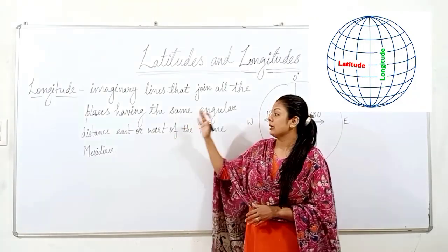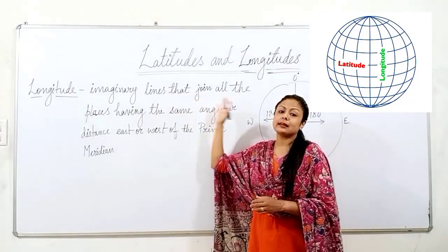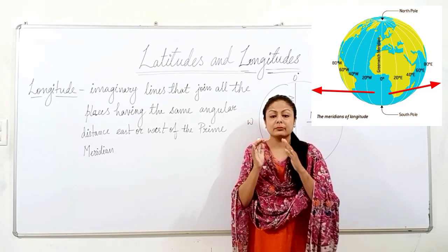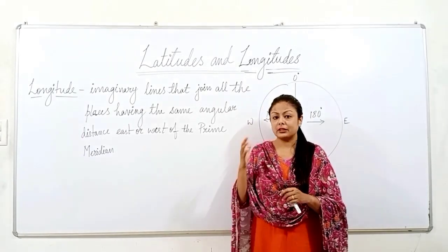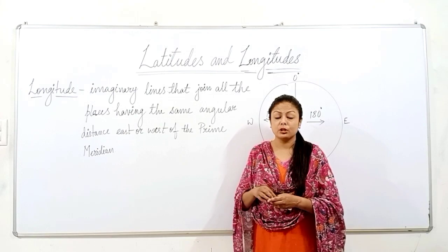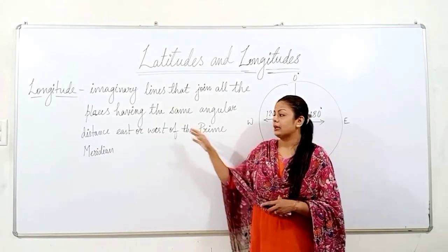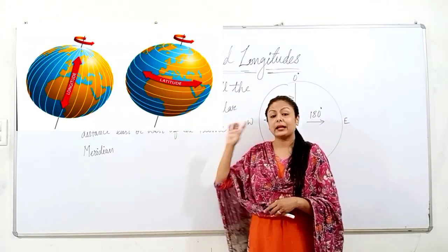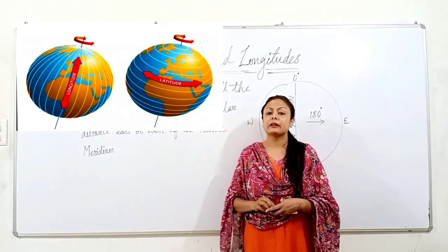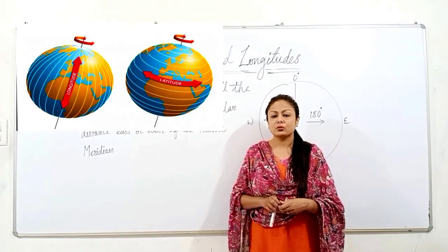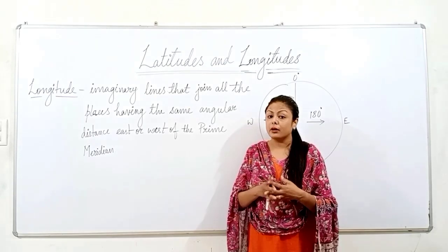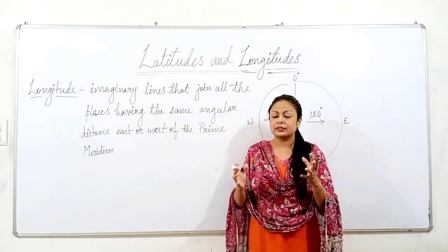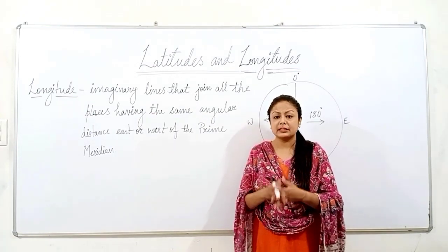A line of longitude is an imaginary line that joins all the places with the same angular distance either east or west of the prime meridian. If you can recall the definition of latitude, it seems similar — the only difference is east or west, and these are vertical lines. Whereas in case of latitudes, they were horizontal imaginary lines. Now students, I will also tell you the characteristics of longitude and we will compare the characteristics of latitudes and longitudes so that you understand the difference between these two and your concept becomes clear.